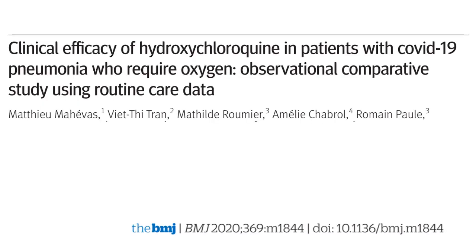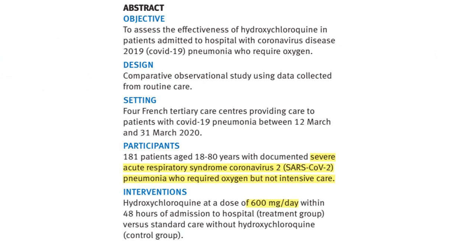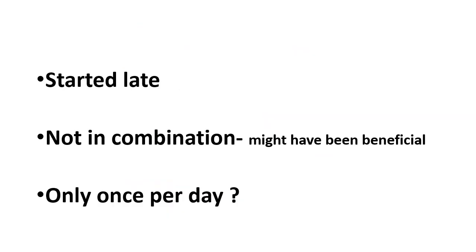Another study published in the BMJ assessed the clinical efficacy of hydroxychloroquine in patients with COVID-19 pneumonia requiring oxygen but not in ICU. Again, they selected sick patients, probably in the late or early pulmonary phase. The dose given was 600 mg per day. Once again, in this study, treatment was started late, the dosing schedule is uncertain, and it was not given in combination with zinc, which might have been more beneficial.